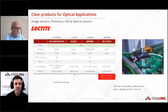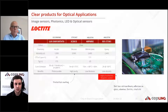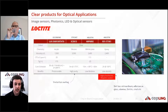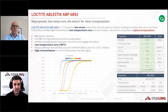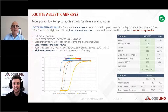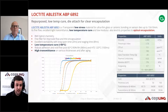Finally, some niche optical applications. All the products shown now are clear materials used for encapsulating image sensors, LEDs, or optical sensors. I want to highlight the ABP-6892 — also an SVHC-free formulation designed for low-stress die-attach applications. Because of its low temperature cure, even at a higher thickness of 100 micrometers, the transmittance is more than 90%, making it ideal for optical encapsulation as well.